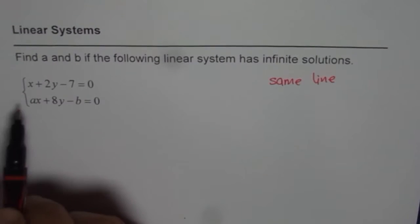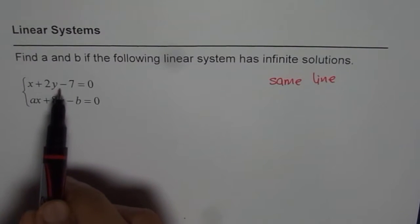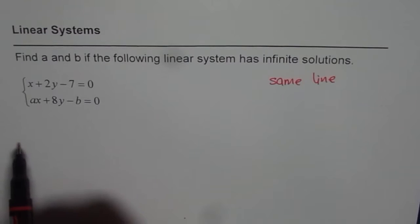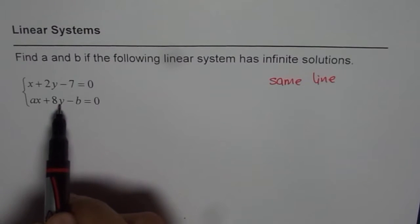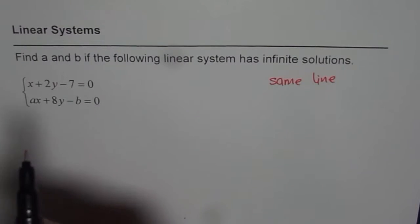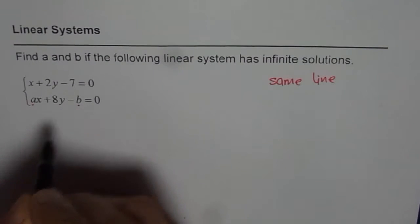Let's study these lines. The first one is x + 2y - 7 = 0. The second is ax + 8y - b = 0. We need to find the values of A and B.